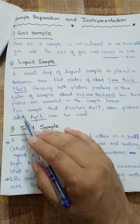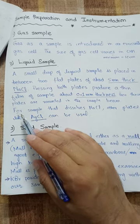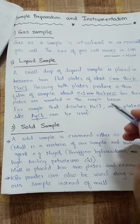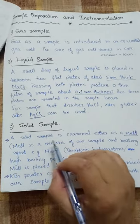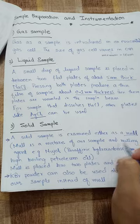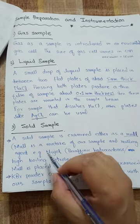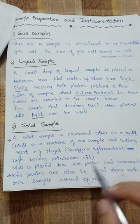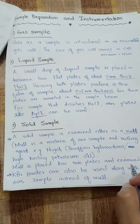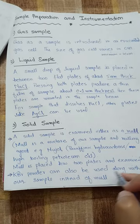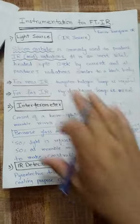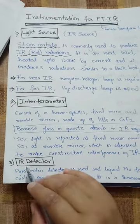For samples that dissolve sodium chloride, we can use other plate materials. For a solid sample, it is examined either as a mull — a mixture of the sample and a mulling agent such as Nujol, which is paraffinic hydrocarbons or high-boiling petroleum oil. The mull is placed between two plates and examined. Potassium bromide powder can also be used along with the sample instead of a mull.